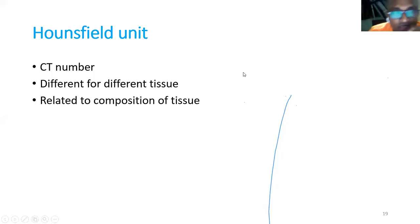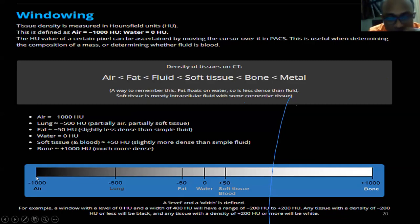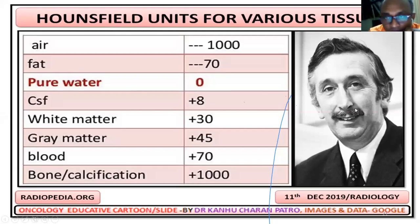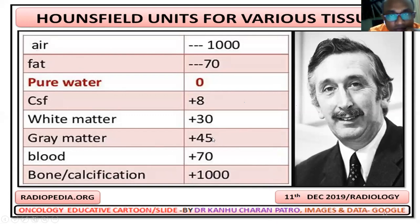Hounsfield unit, otherwise called CT number, is a different value for different tissues based on tissue composition. It ranges from minus 1000 to plus 1000: minus 1000 is air, plus 1000 is bone, and water is zero. All other tissues fall in between. This scale was named after the inventor of CT, Sir Godfrey Hounsfield. Common values include CSF around 8, white matter around 30, and gray matter around 45.